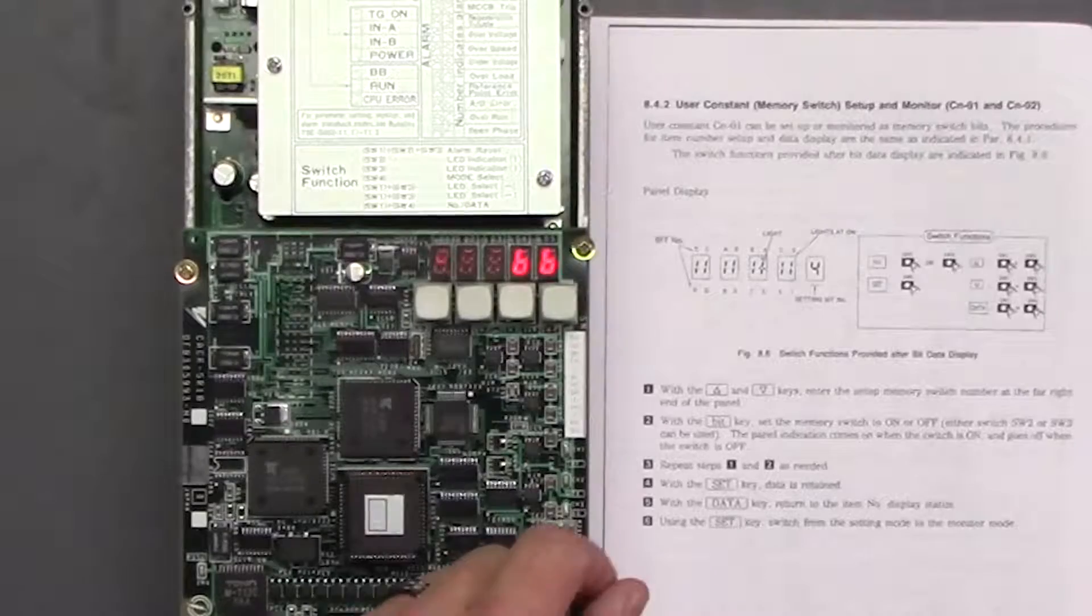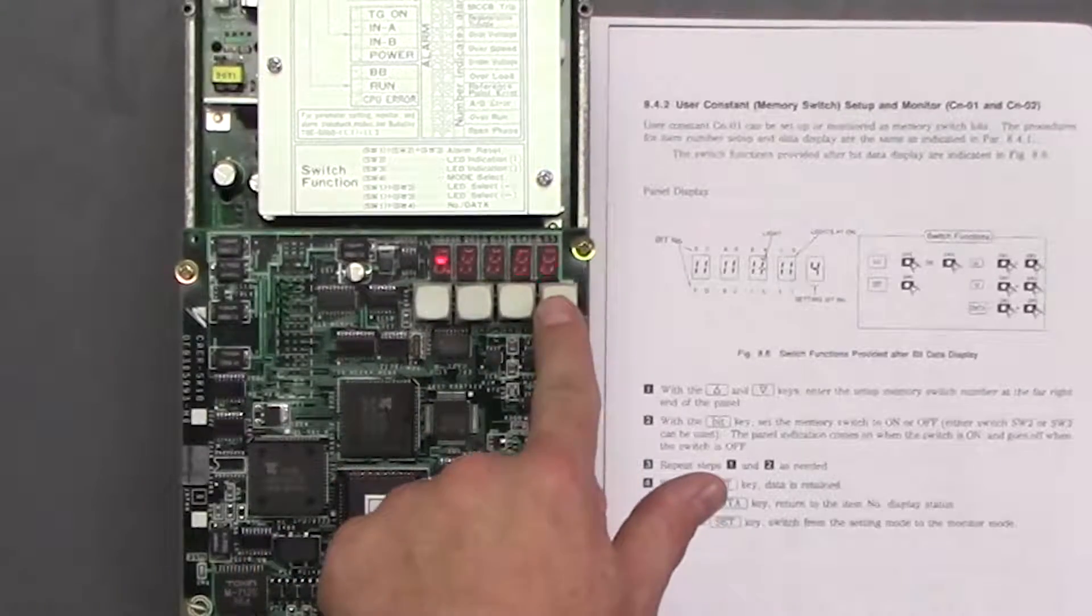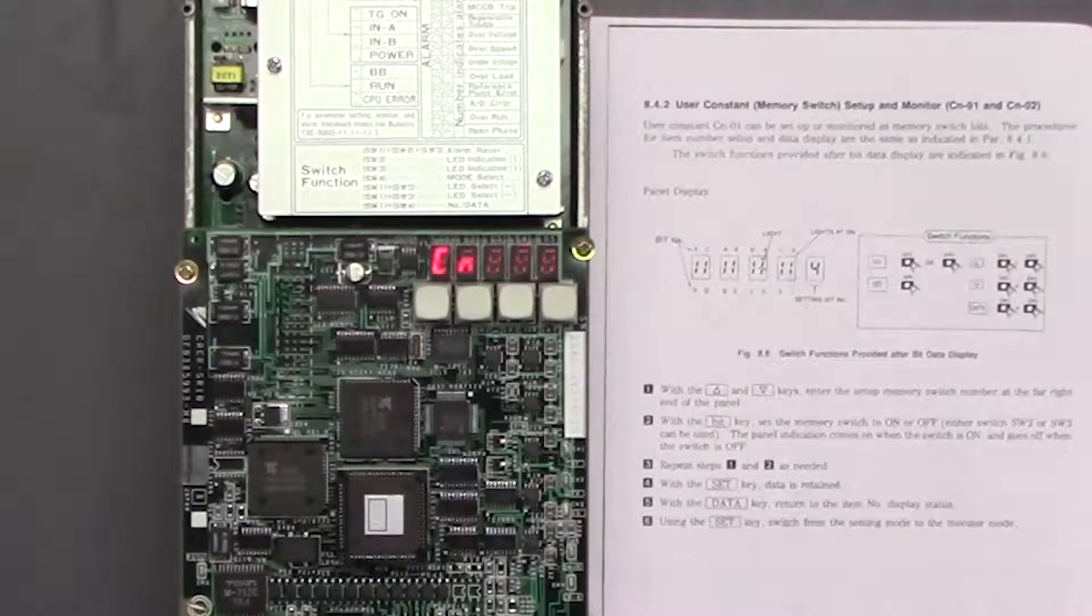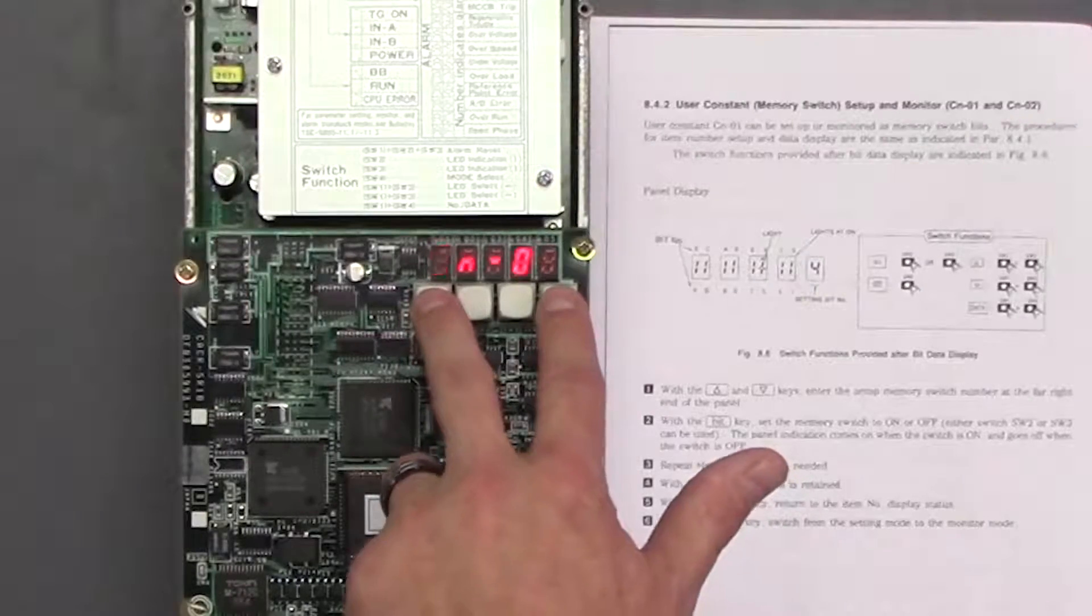So currently we're in the status mode and we have a base block so we're going to do switch 4. It's going to go to CN. The first CN parameter we're going to go into is CN1. So 1 and 4.